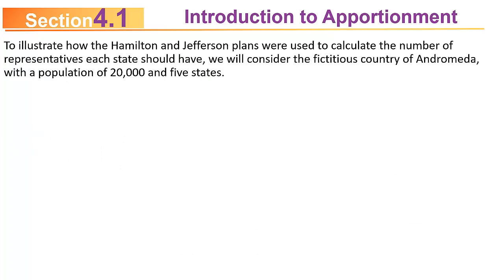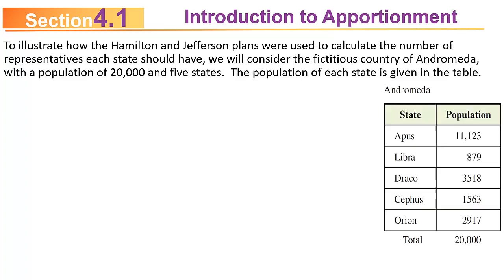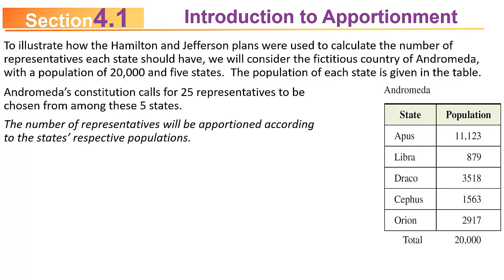To illustrate how the Hamilton and Jefferson plans calculate the number of representatives each state should have, we'll consider the fictitious country of Andromeda with a total population of 20,000 people. Andromeda has five states: Apis, Libra, Draco, Cephas, and Orion. Andromeda's Constitution calls for 25 representatives chosen from among those five states, apportioned according to each state's respective population. In other words, a bigger state should have more representatives and a smaller state should have fewer.